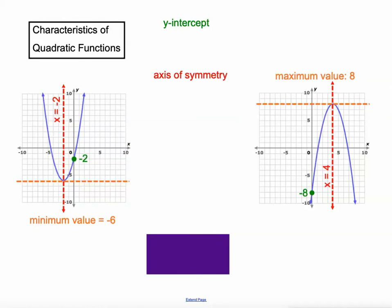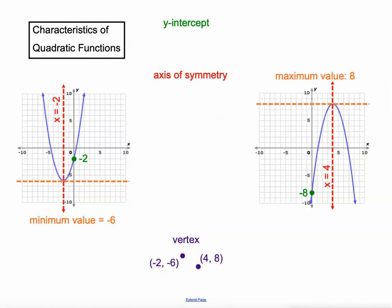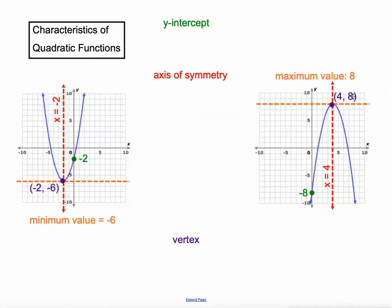Now the intersection of that red line and that orange line — they meet at a very important point, which is the vertex. So the vertex on this one is at negative 2, negative 6. Notice that the x value is the same as the value in the axis of symmetry, and the y value is the same as the minimum value, negative 6. The vertex on this one over here is at 4, 8. And again, notice the x value of the vertex is the same as the axis of symmetry, and the y value is the same as the maximum value.